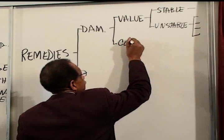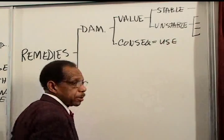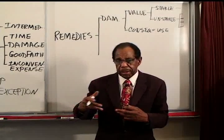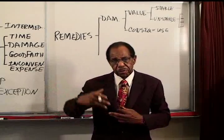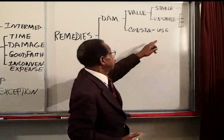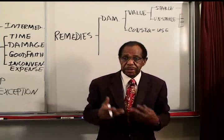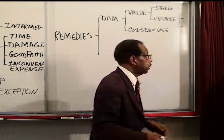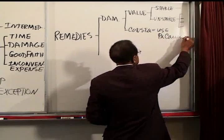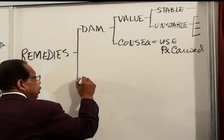You can also get consequential damages, such as loss of use. During the time when you discover your item has been converted and you need a reasonable time to go get another one, you've suffered loss of use during that period. Many jurisdictions will give loss of use, and others — like California — say any harm that was proximately caused by the conversion, not just use but any harm that was proximately caused.